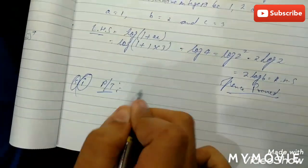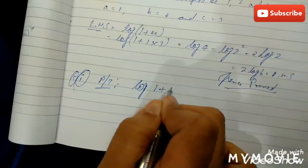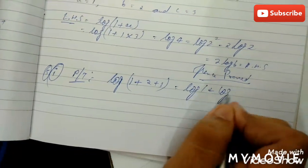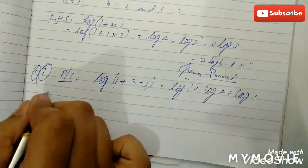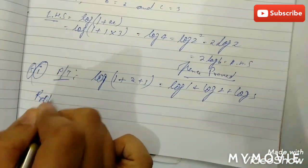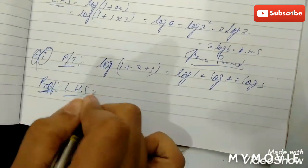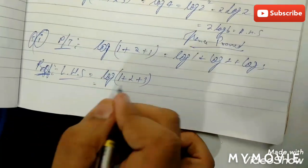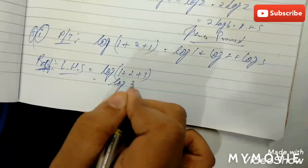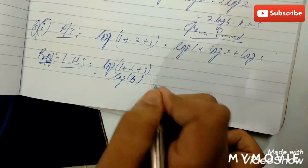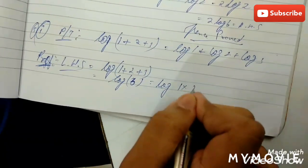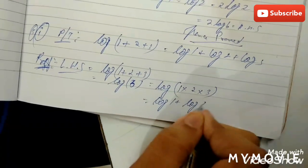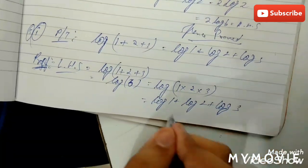Prove that log(1 + 2 + 3) equals log 1 plus log 2 plus log 3. Log(1 + 2 + 3) equals log 6. Log 6 can be written as log(1 into 2 into 3), and by the product rule this equals log 1 plus log 2 plus log 3. Hence proved.